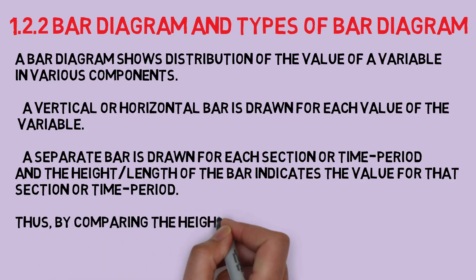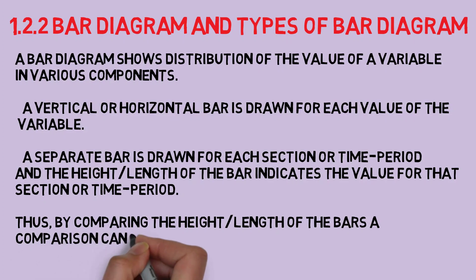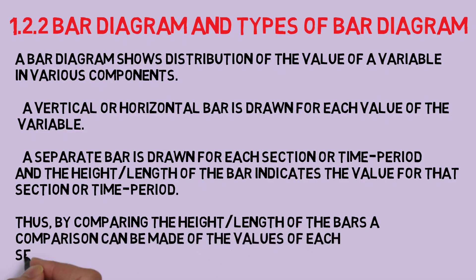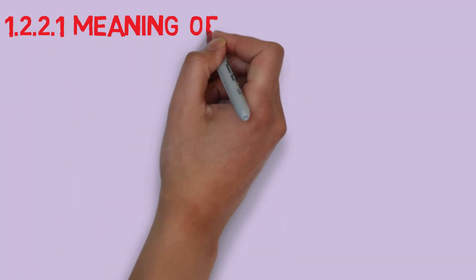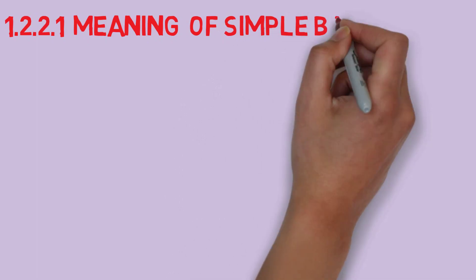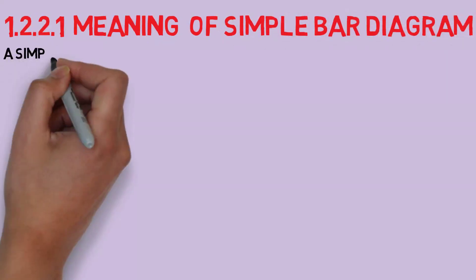Thus by comparing height and length of bars, a comparison can be made of the values of each section. So now we will move further on types of bar diagram. Number one: simple bar diagram.